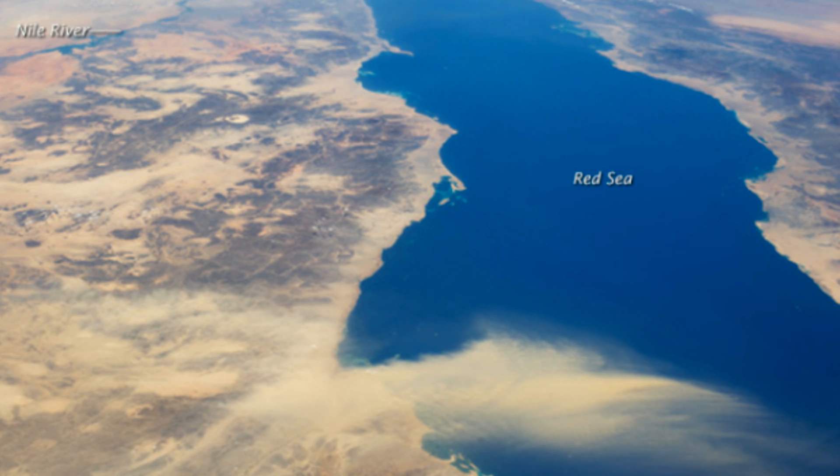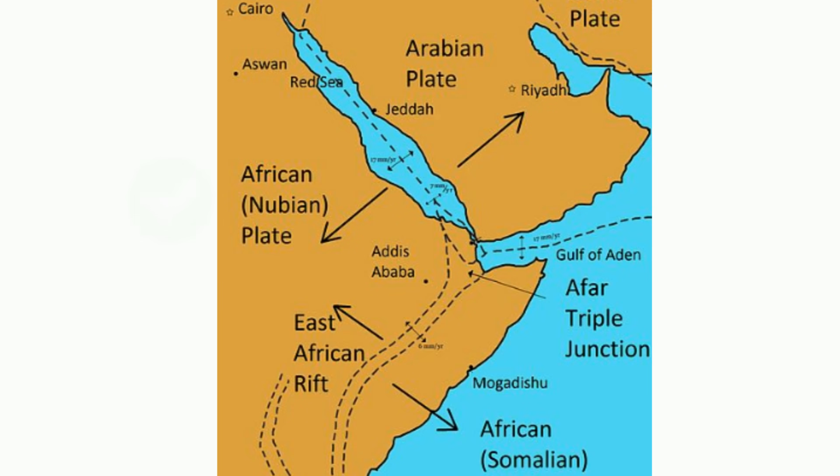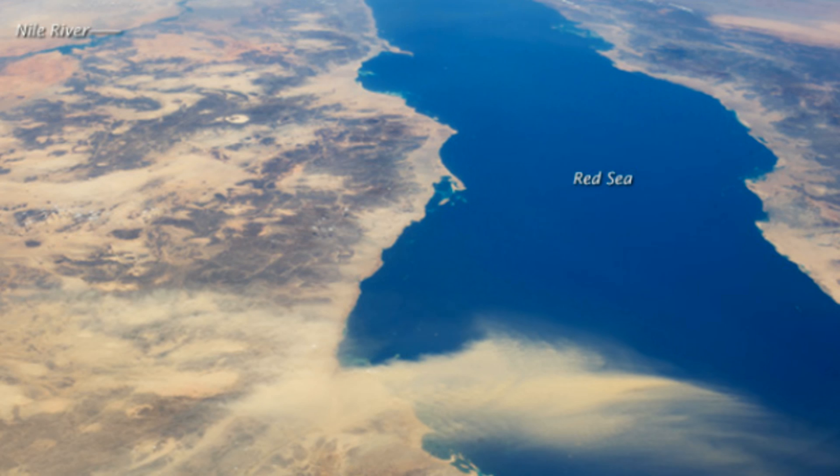The Red Sea was formed by the divergence between the African plate and the Arabian plate. The rift transitioned eventually from a continental and continental to a continental and oceanic plate boundary.